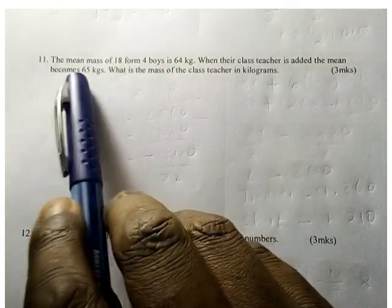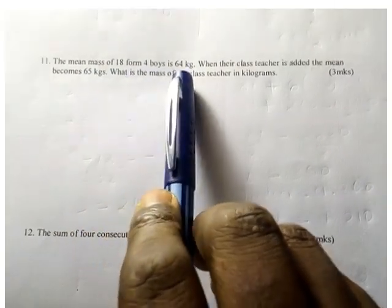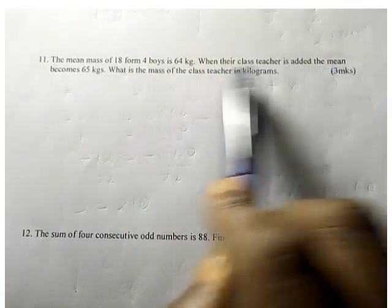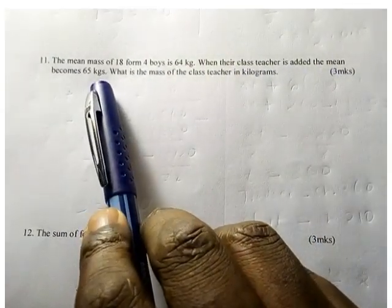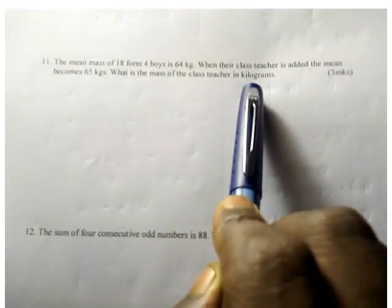The mean mass of 18 form four boys is 64 kg. When their class teacher is added, the mean becomes 65 kilograms. What is the mass of the class teacher in kilograms?